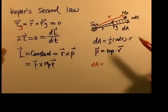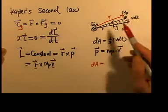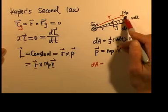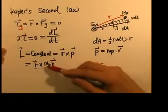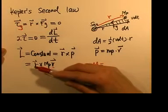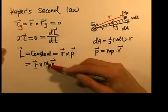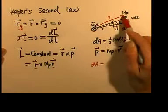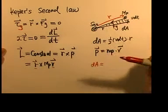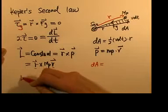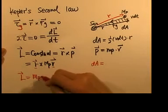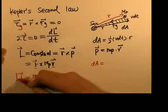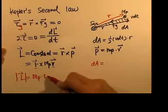We can replace r and v, because in our case the velocity is the tangential velocity. When we have a vector crossed with another vector, that gives the magnitude of one times the magnitude of the other times the sine of the angle between them. Since radius and tangential velocity are 90 degrees apart, sin(90°) = 1. So angular momentum L equals mass of planet times r times v.